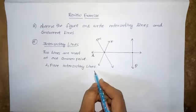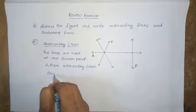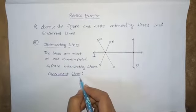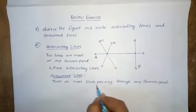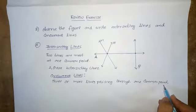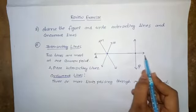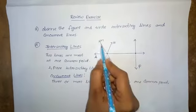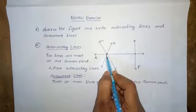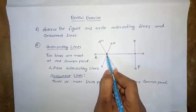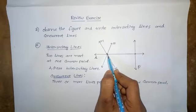Next, identify the concurrent lines. Concurrent lines are three or more lines passing through one common point. Observe the diagram — lines L, M and N are all passing through only one common point, so lines L, M and N are concurrent lines.